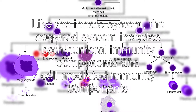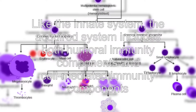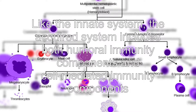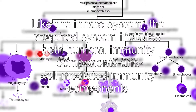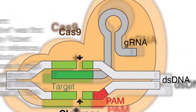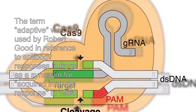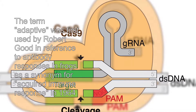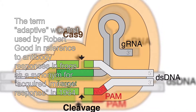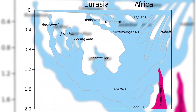Like the innate system, the acquired system includes both humoral immunity components and cell-mediated immunity components. The term adaptive was first used by Robert Good in reference to antibody responses in frogs as a synonym for acquired immune response in 1964.